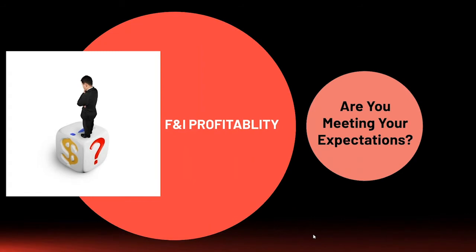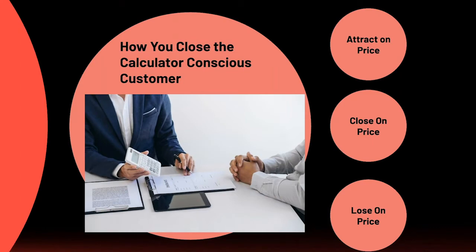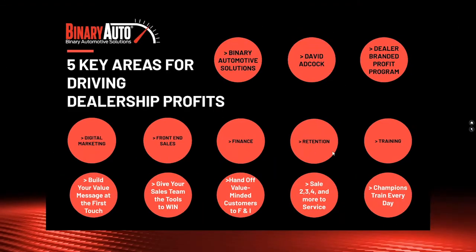JD Powers surveys 85,000 new car buyers and asks them to rank the top 10 things in order of importance. Price ranks number six — number one is quality and peace of mind. Yet we continue to market on price. Finance departments have had to carry the load for dealerships, but we're attracting customers on price, closing on price, and sending them to finance where they're not looking at value. We're setting our finance departments up for failure in the showroom.